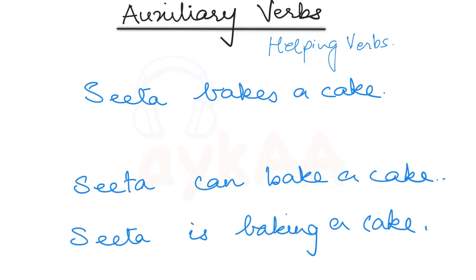Now in this case let's identify the verbs. So here we have bakes as the verb, and in the next two sentences Sita can bake a cake, we know can and bake both are verbs, and in Sita is baking a cake, again is and baking, both these are verbs.